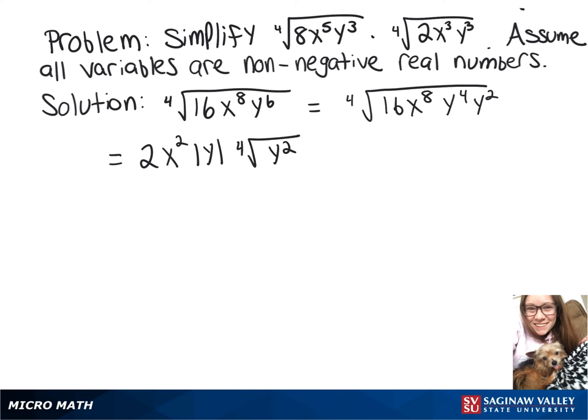And now, since the directions say that our variables are non-negative real numbers, we can rewrite this as 2x squared y times the 4th root of y squared.